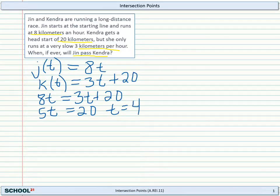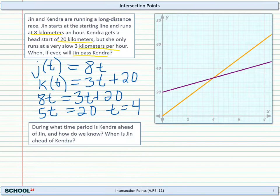So after 4 hours, Jin will pass Kendra. Very much like a system of linear equations. Let's take a look at the graph. So here's a graph of the two functions.